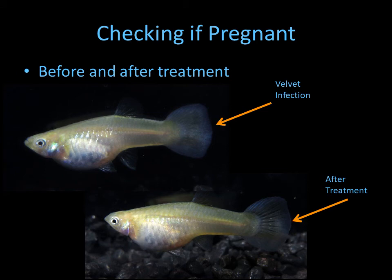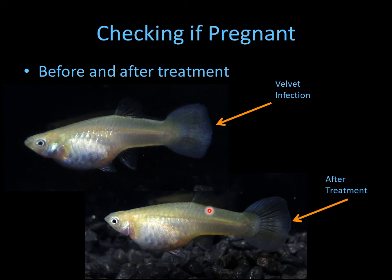Here's a comparison so you can see the difference. Here's the fish that has velvet — it's kind of a milky color. And look after treatment: you can see how the tail is clear and the peduncle is smooth. It doesn't have the coating that you can see on the peduncle in the before image.